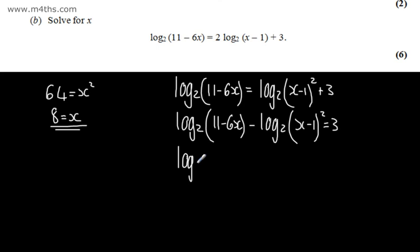So I can write now log to the base 2 of 11 minus 6x divided by x minus 1 all squared will be equal to 3.